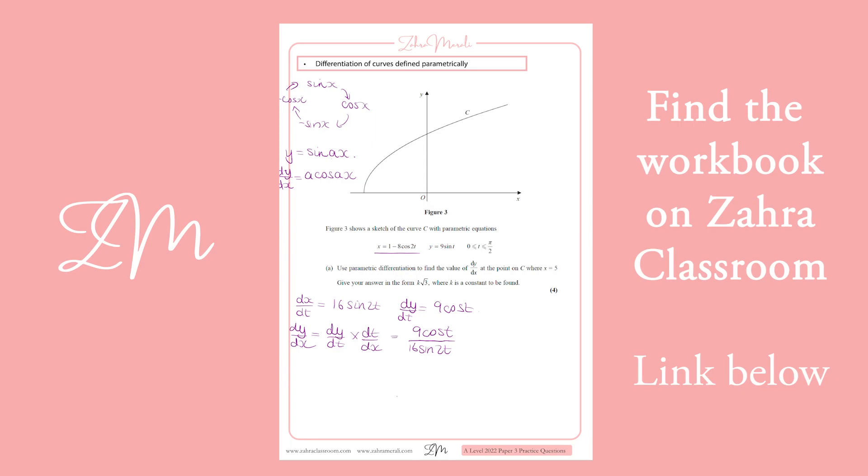Right, so now we've got there and now we want to know what happens when x equals 5 because we need a t value to substitute into there. So when x equals 5, we get 5 equals 1 minus 8 cos 2t. So that gives us cos 2t equals minus a half. We want to be in radians. Have a look at your range, your domain or your values of t that you need. So inverse cos of minus a half is going to give you 2 pi by 3. So t is going to give you pi by 3.